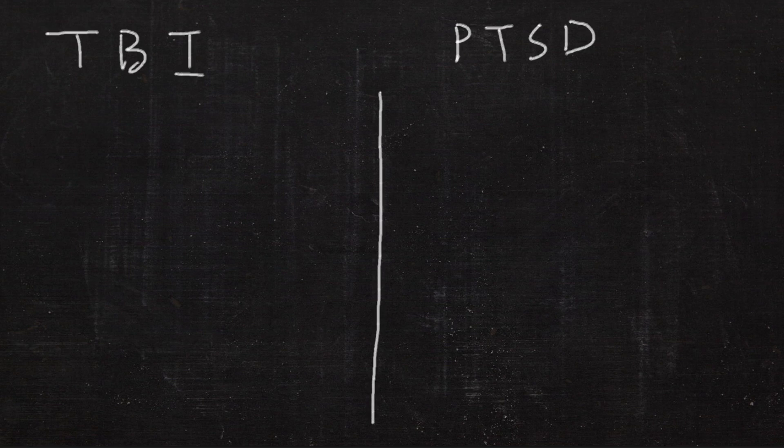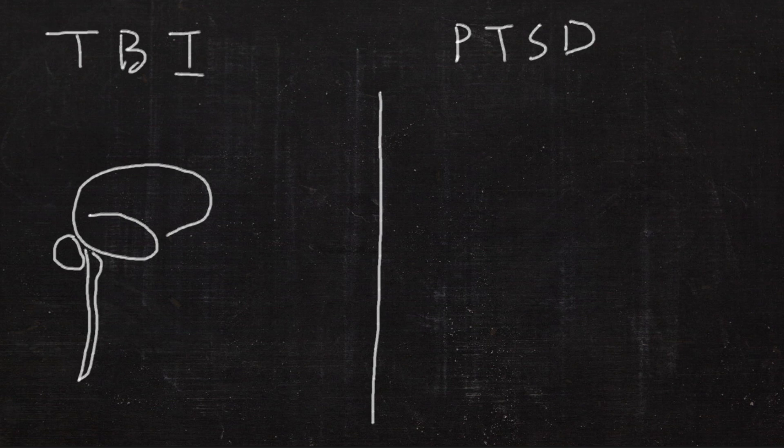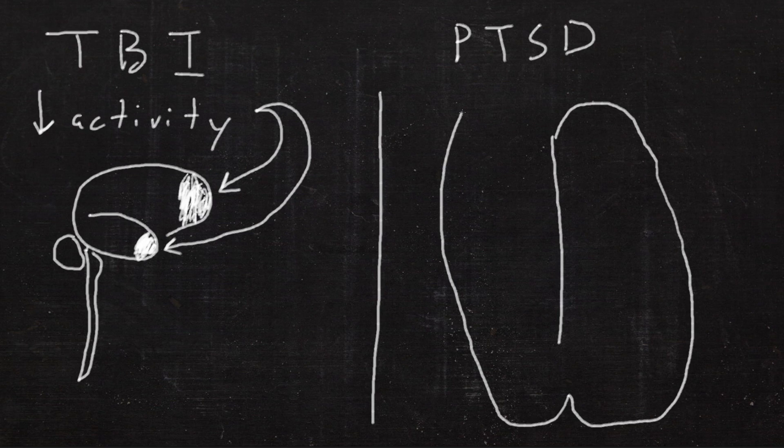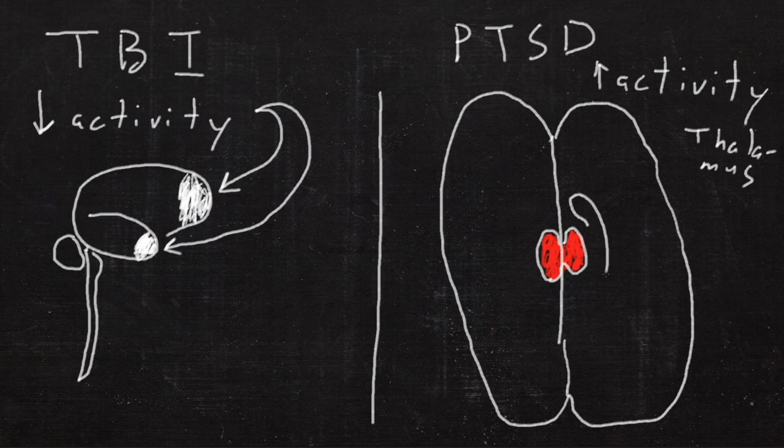So what we found was that in traumatic brain injury, there's decreased activity in the frontal and temporal lobes, whereas in post-traumatic stress disorder, there's increased activity in deep brain structures. The first one's the thalamus, which is like the relay station of your whole brain, and then the basal ganglia.